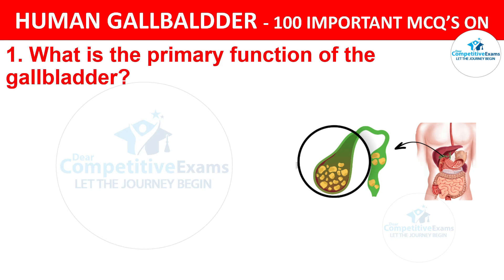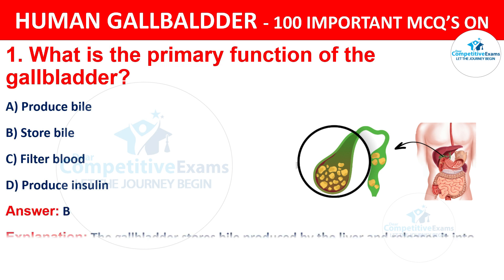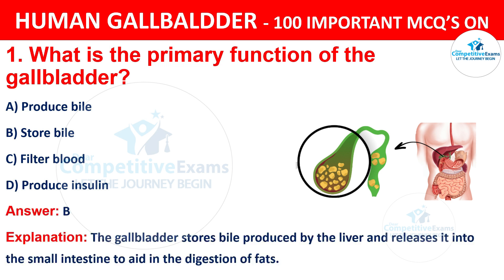Question 1: What is the primary function of the gallbladder? Your options are: A) Produce Bile, B) Store Bile, C) Filtering Blood, D) Produce Insulin. The correct answer is B, i.e. Storing Bile. The gallbladder stores bile produced by the liver and releases it into the small intestine to aid in the digestion of fats.